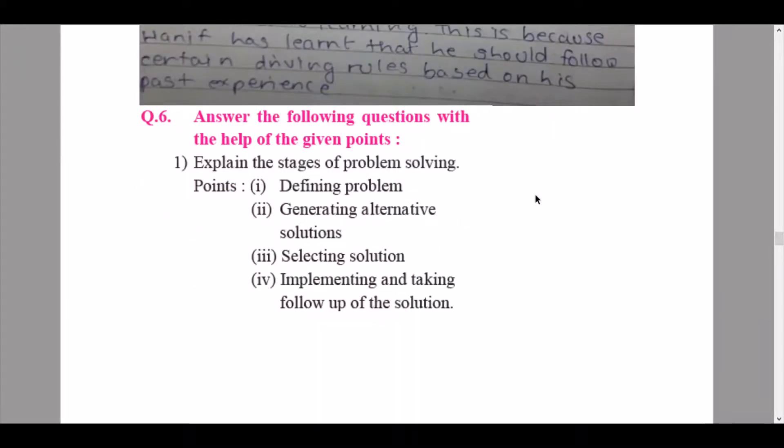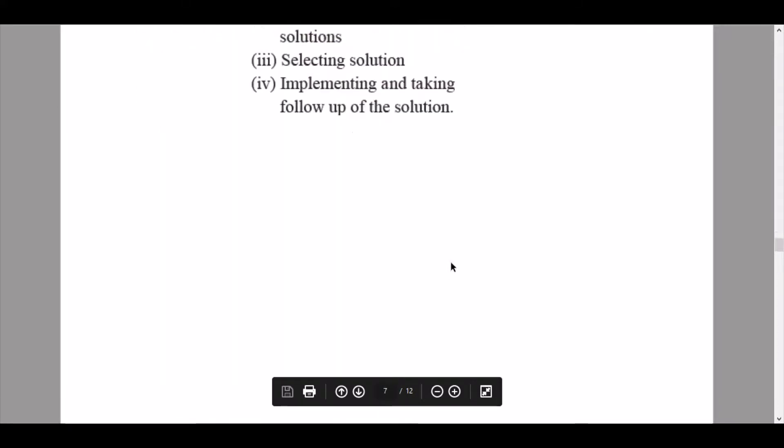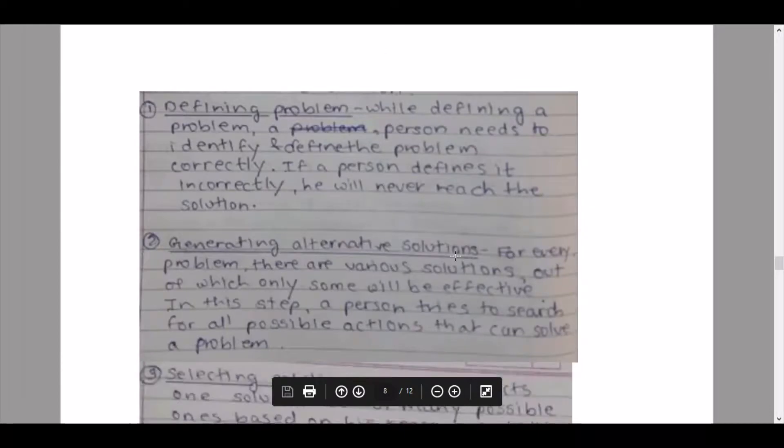Then we continue to our question number six: answer the following questions with the help of the given points. Explain the stages of problem solving. The points given to us are defining problem, generating alternative solutions, selecting solution, implementing and taking follow-up of the solution. So I'll just scroll down so that you guys can see the answer. I'll read it out to you.